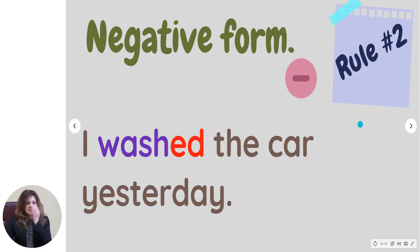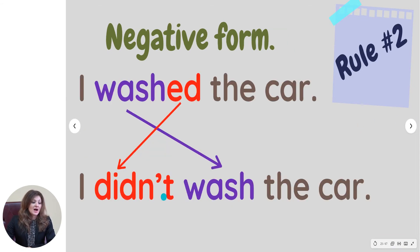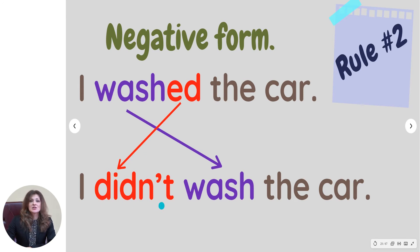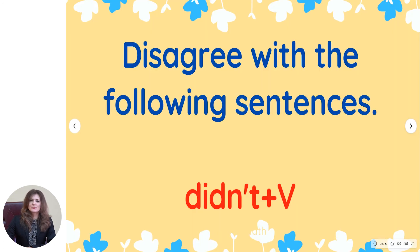Now I want to turn this sentence into a negative one. Be very attentive — I use 'didn't' and the verb without -ed at the end. So 'I washed the car' becomes 'I didn't wash the car.' In affirmative sentences, -ed shows us the sentence is in the past, but in negative sentences, 'didn't' shows us that the sentence is in the past.